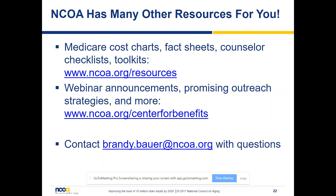Moving to Q&A: Shannon opens the floor and notes a question in the chat asking whether there is a cheat sheet people can fill out with all information prior to entering it into Benefits Checkup. Brandy believes NCOA does have a Benefits Checkup cheat sheet listing what people need for a complete screening. She'll look for it and send it to Shannon to circulate with the slides. Shannon then unmutes everyone for open questions.